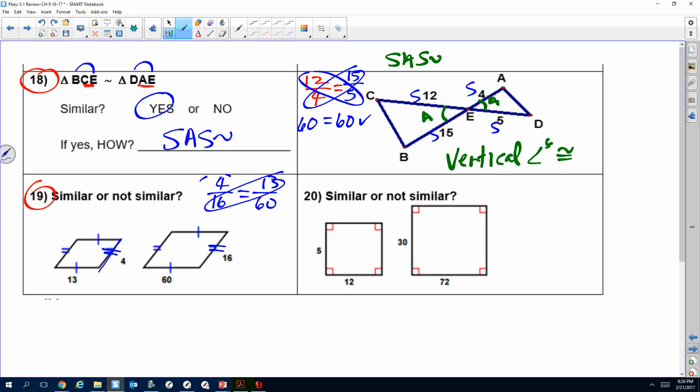If I cross multiply here, am I going to get the same cross products? Well, 16 and 13, that's going to give me 208, and this is going to be 240. So no, they are not the same cross products, so it's not similar.